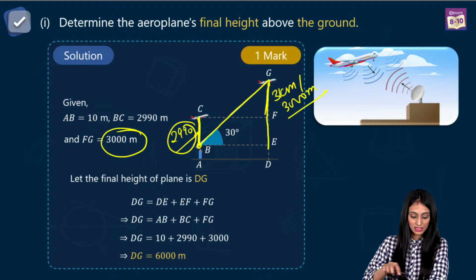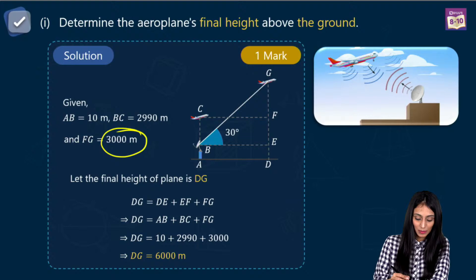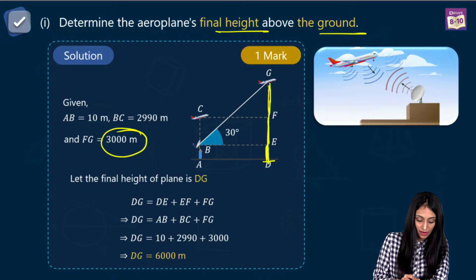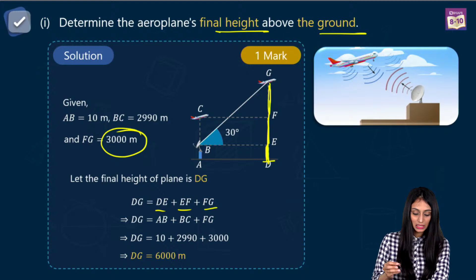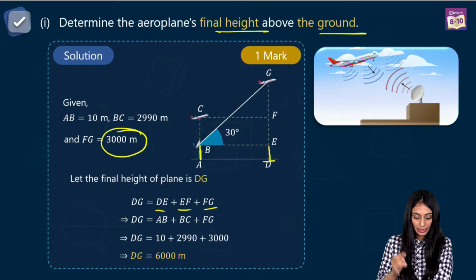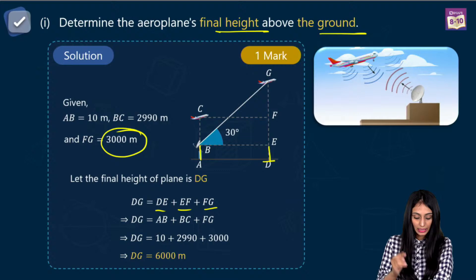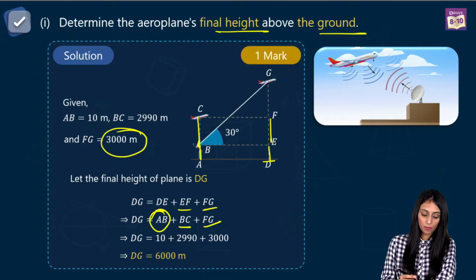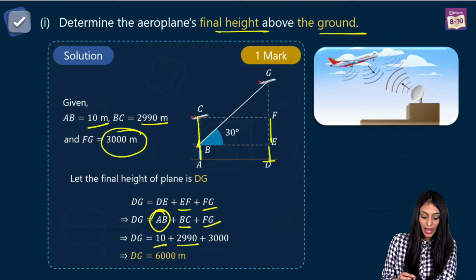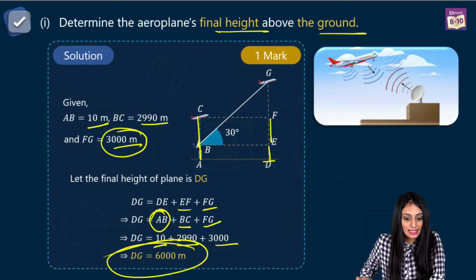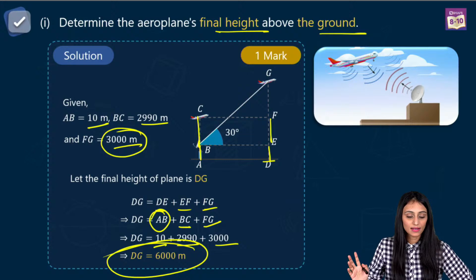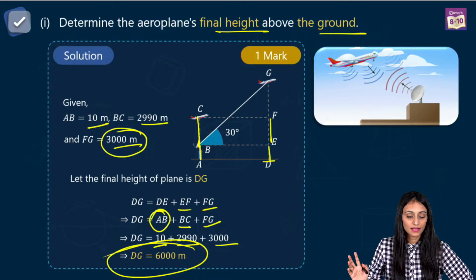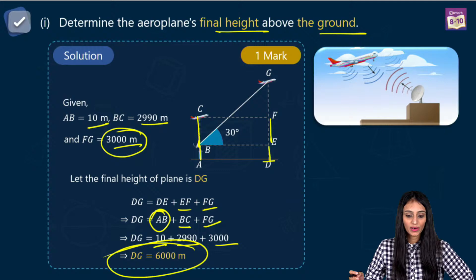To find the final height DG above the ground, I need DE, EF, and FG. DE equals AB which is 10 meters. EF equals BC which is 2,990 meters. FG is 3,000 meters. So DG equals 10 plus 2,990 plus 3,000, which is 6,000 meters. That's the final height.